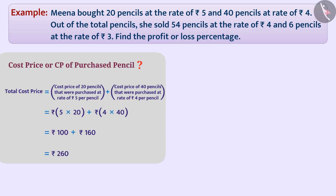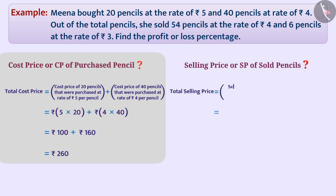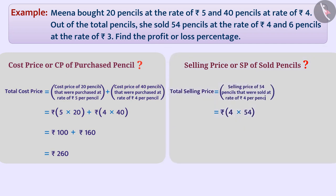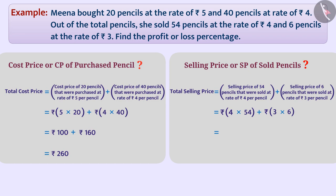Similarly, let's find the total selling price of the pencils. Total selling price is equal to the selling price of 54 pencils sold at the rate of Rs 4 per pencil, plus the selling price of 6 pencils sold at the rate of Rs 3 per pencil, which is equal to Rs 216 + Rs 18 = Rs 234.